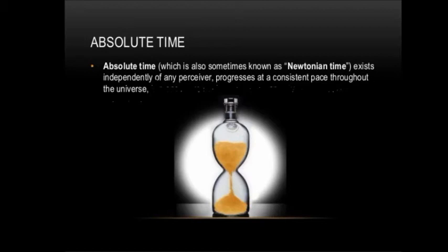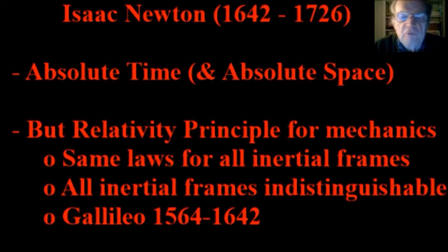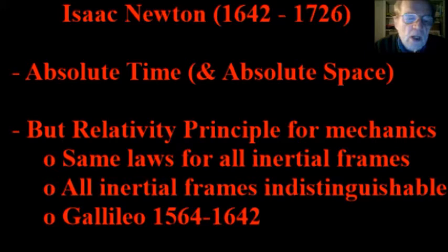Newton's idea of time was absolute time, where absolute time exists independent of any observer and absolute time progresses at a consistent pace throughout the universe. While Newton believed in absolute time — and by the way, in absolute space — he was also a proponent of the relativity principle for mechanics. It was limited to mechanics and was not extended to the propagation of light at this time.